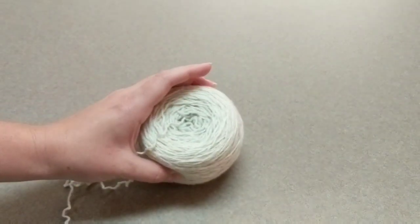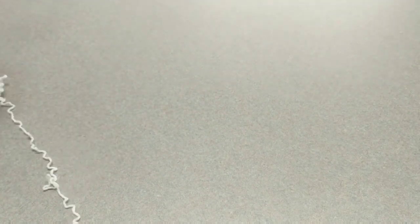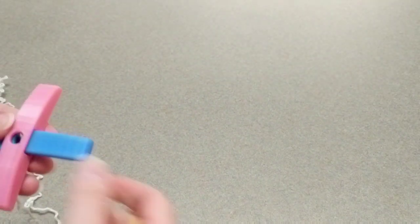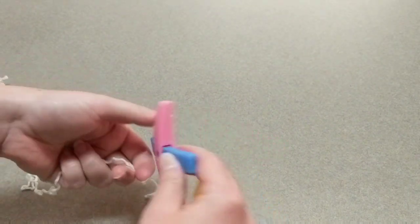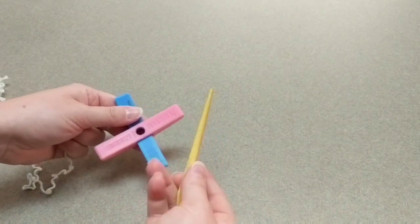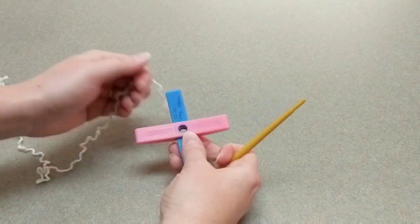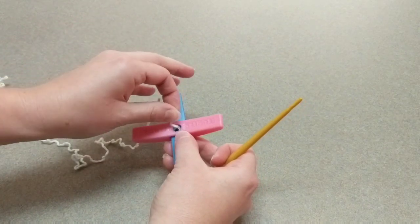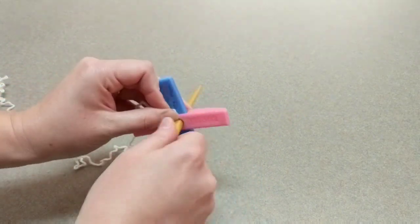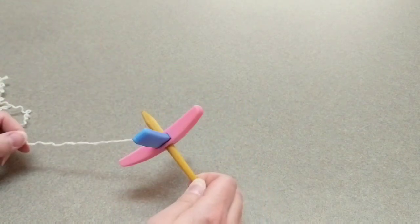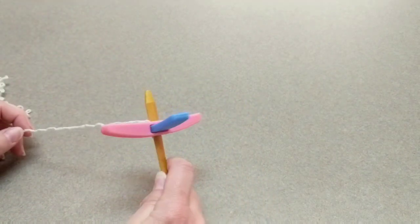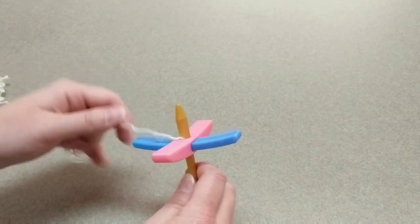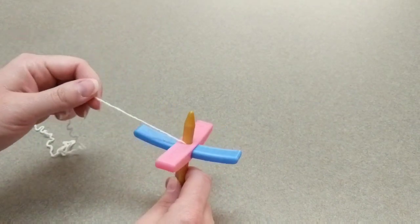Here is a ball of commercial yarn that we're going to pretend is our singles, and we have a spindle here with its shaft, and we are going to pretend that this end of the yarn is the leader that we have already started, and I have a video on that, so if you need to find that video, just go back and look for how to start a leader on your Turkish spindle.